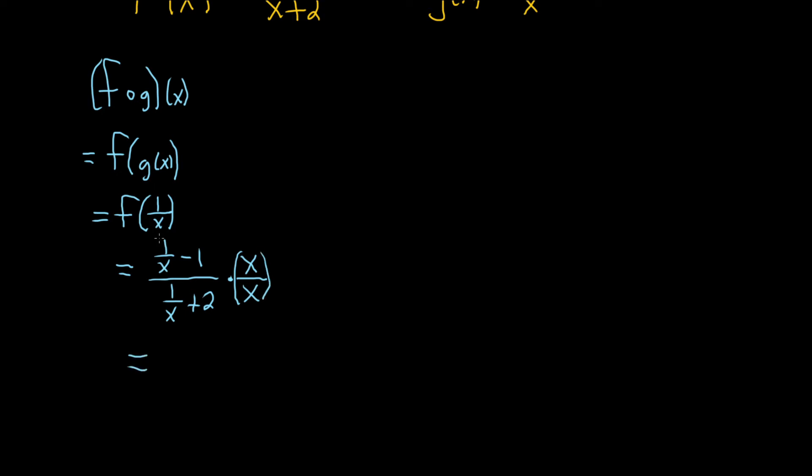And so watch this. This is really in parentheses, and this is really in parentheses. So now we distribute. x times 1 over x is 1. x times 1 is x.